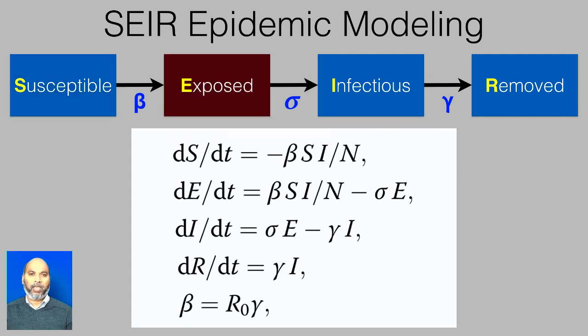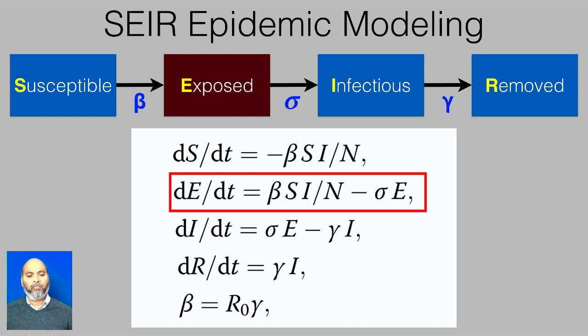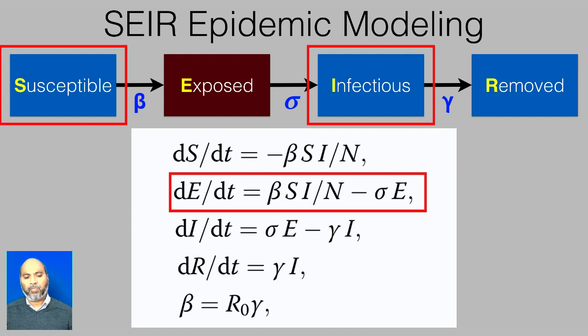We have to look at exposed. Exposed is given by this equation, which is pretty similar to that. It depends upon, obviously, the number of susceptible people and infectious, but also its own number, the exposed number.